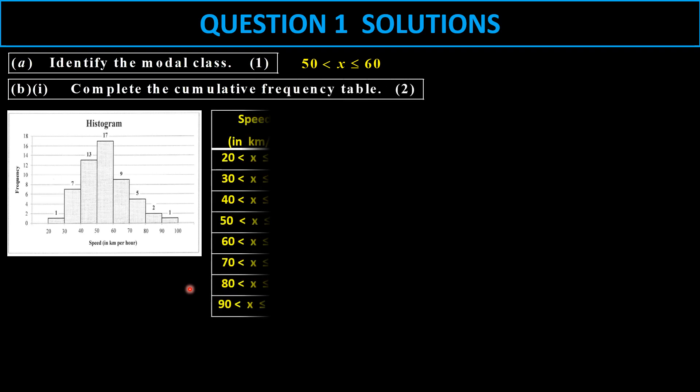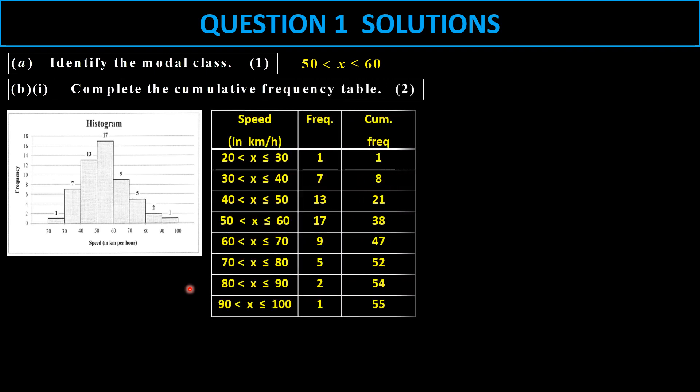Complete the cumulative frequency table. So in other words, we have to say, you can see 1 plus 7 is 8, 8 plus 7 is 13, 8 plus 13 is 21. And 54 plus 1 is 55. And there are 55 data points. So that 55 is correct.